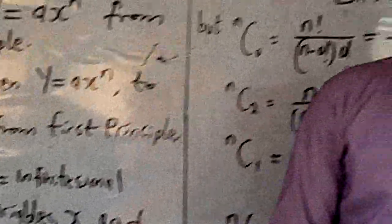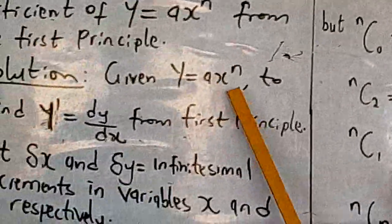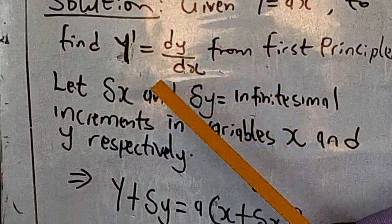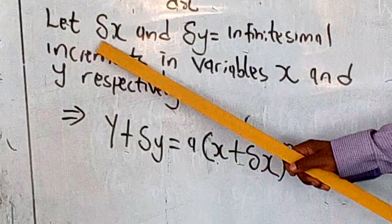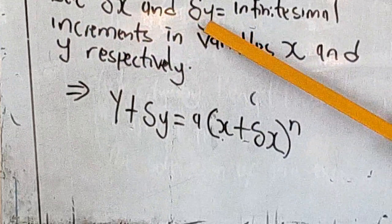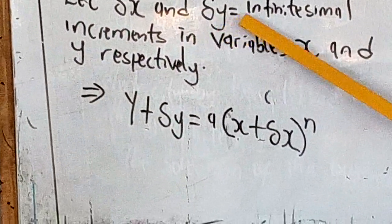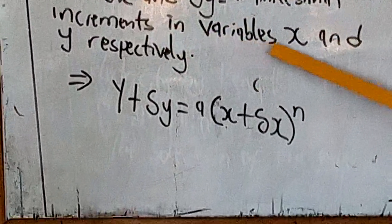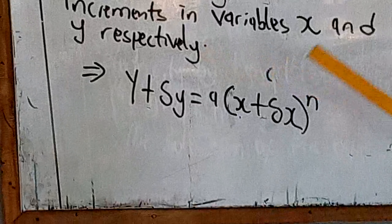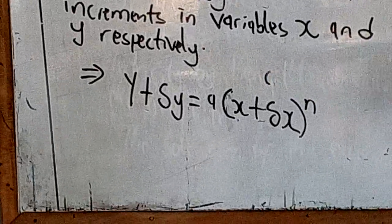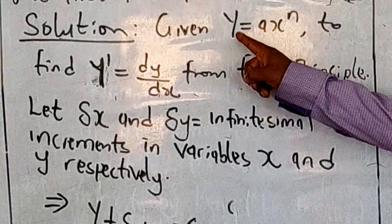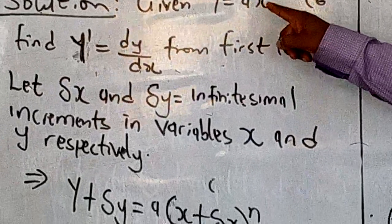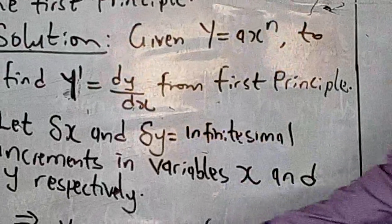Let there be a small increment in x and a small increment in y. The small increment in x is taken as delta x, and the small increment in y is taken as delta y. We call it an infinitesimal increment — that is, a very small increment in variable x and variable y respectively. When there is an increment in y, we write y plus delta y; when there is an increment in x, we write x plus delta x.